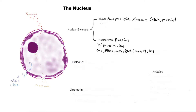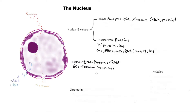Now let's cover the nucleolus — that dark portion inside the nucleus. What is its function? For the IMAT, you just need to know it makes ribosomes, specifically the 80S ribosome — not the 70S, which is made somewhere else. So its role is 80S ribosome synthesis. What does the nucleolus contain? It contains DNA — really everything inside the nucleus contains DNA — and since it's involved in making ribosomes, it also contains protein and rRNA. That's as deep as you need to go for the IMAT.